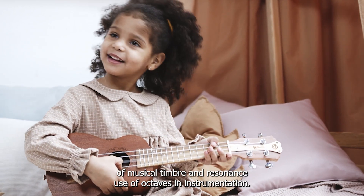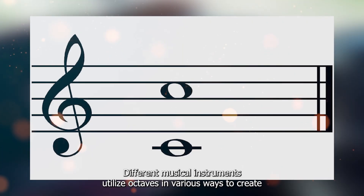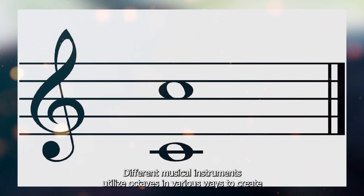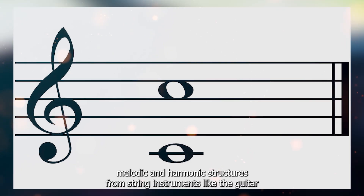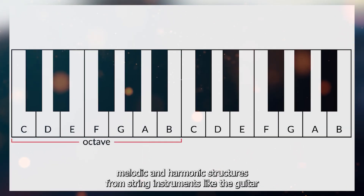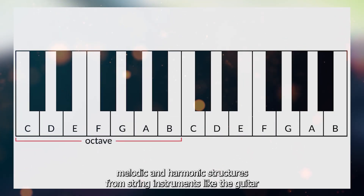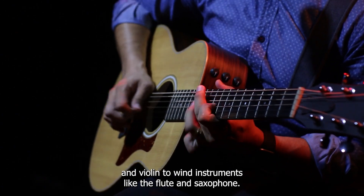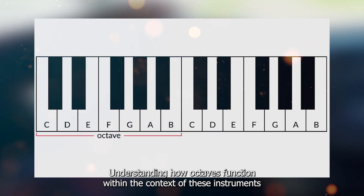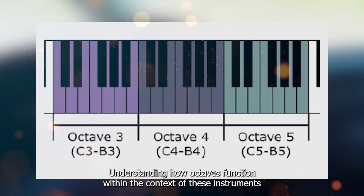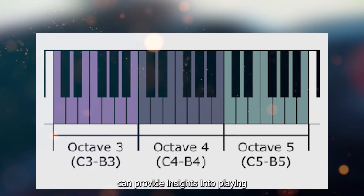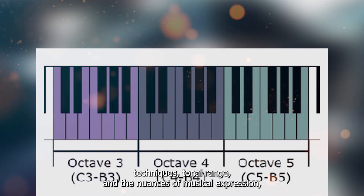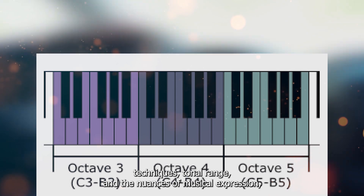Different musical instruments utilize octaves in various ways to create melodic and harmonic structures. From string instruments like the guitar and violin to wind instruments like the flute and saxophone, understanding how octaves function within the context of these instruments can provide insights into playing techniques, tonal range, and the nuances of musical expression.